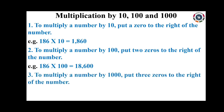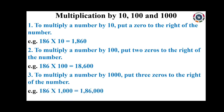Third, multiply a number by 1000: put 3 zeros to the right side of that number. For example, 186 into 1000 — put 3 zeros to the right side of 186. So 186 into 1000 equals 186,000.